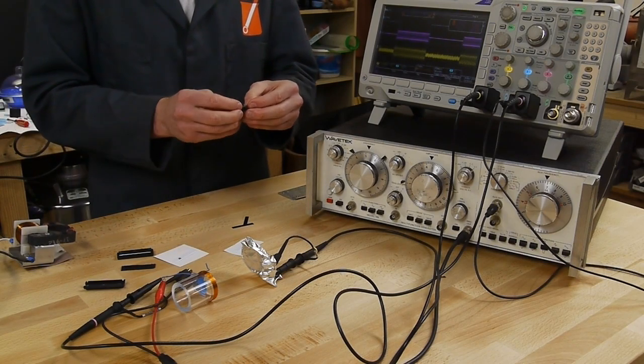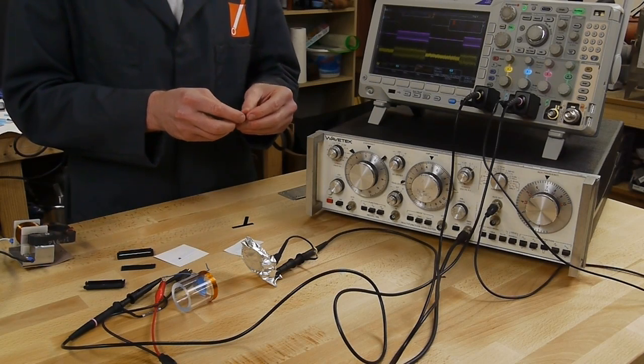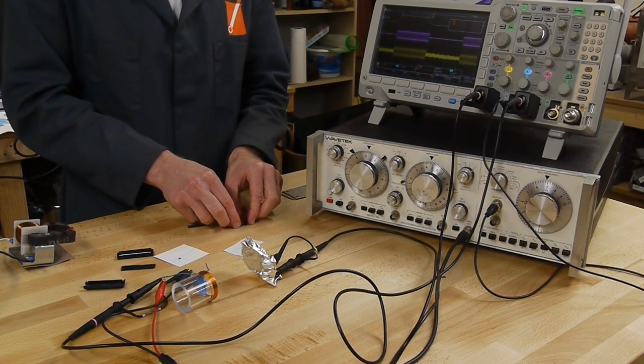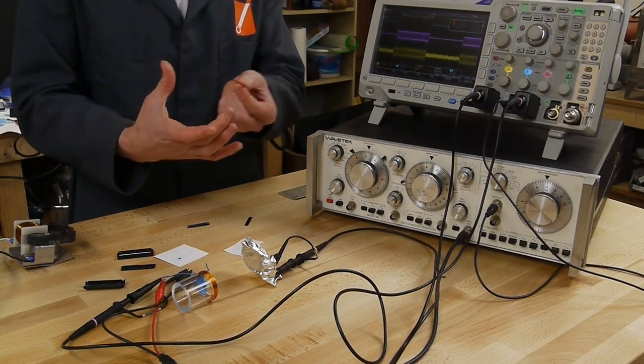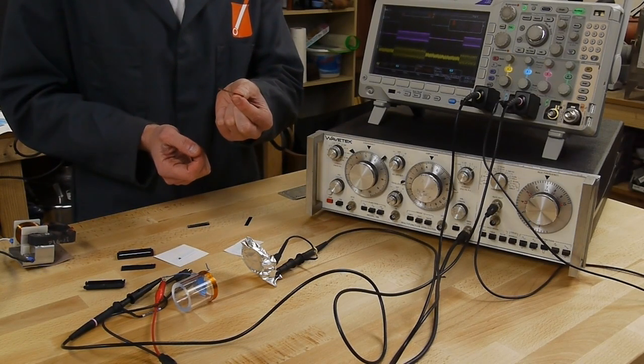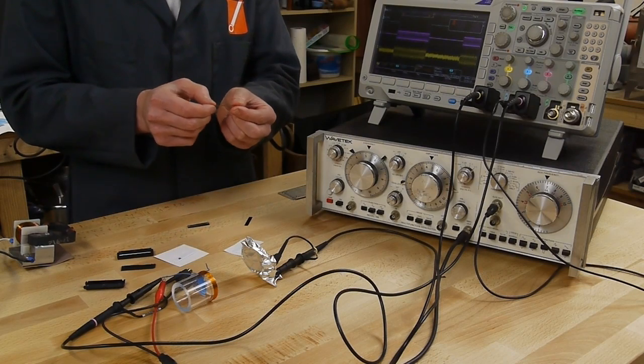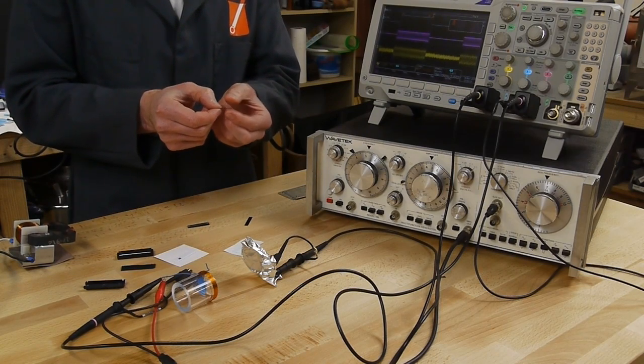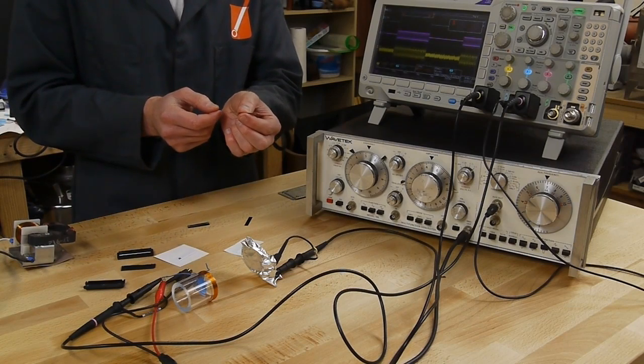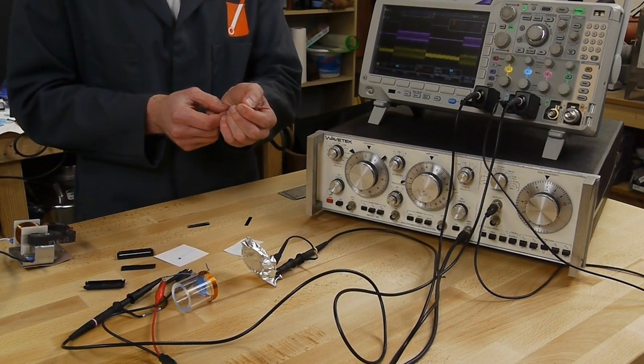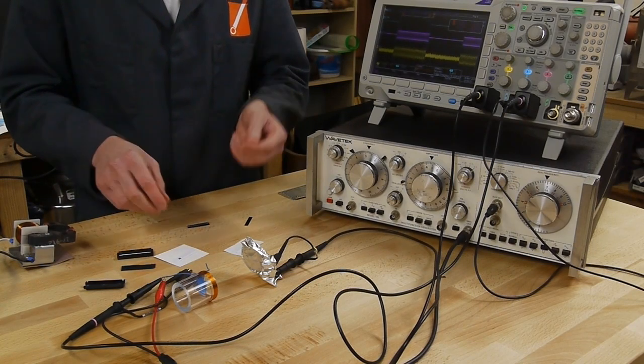The thing that makes these work is the principle of magnetostriction, which is pretty cool. If you take a piece of ferrous metal and put it into a magnetic field, it will actually change shape slightly, very slightly. But the point is that you can actually make this thing oscillate, make it vibrate back and forth by just putting it into an oscillating magnetic field. So let's take a look at that.